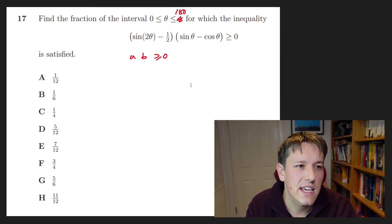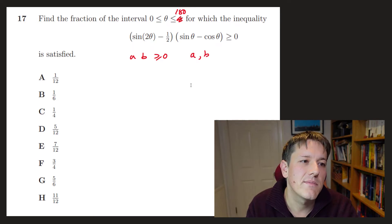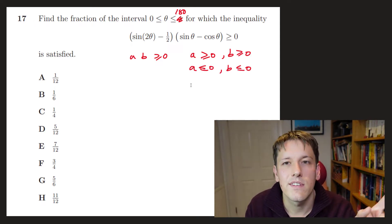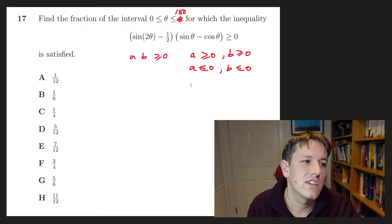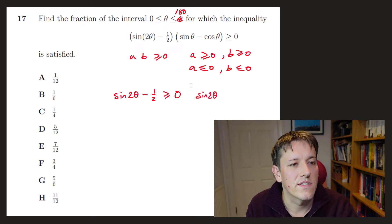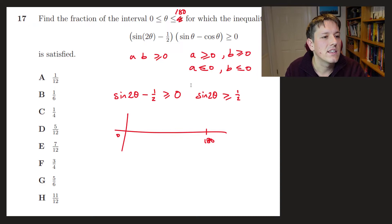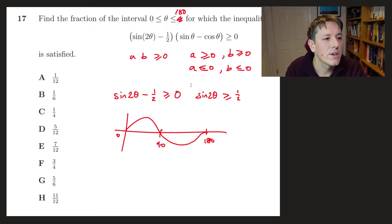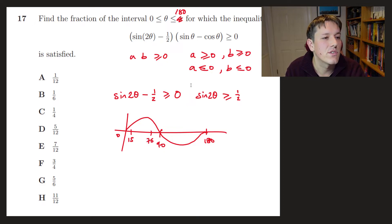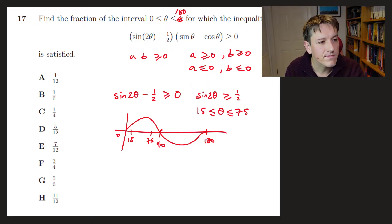We have a product of two brackets that must be ≥ 0, so either both are positive or both are negative. For the first bracket, I need sin(2θ) ≥ 1/2. Between 0° and 180°, sin(2θ) covers the full sine curve. Since sin(θ) = 1/2 at 30° and 150°, sin(2θ) = 1/2 at 15° and 75°. So sin(2θ) ≥ 1/2 when θ is between 15° and 75°.